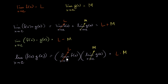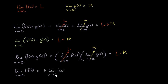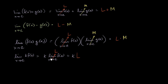Same thing if instead of having a function here, we had a constant. The limit of k times f of x as x approaches c, where k is just some constant, is going to be the same thing as k times the limit of f of x as x approaches c, which equals k times L. This is often called the constant multiple property.